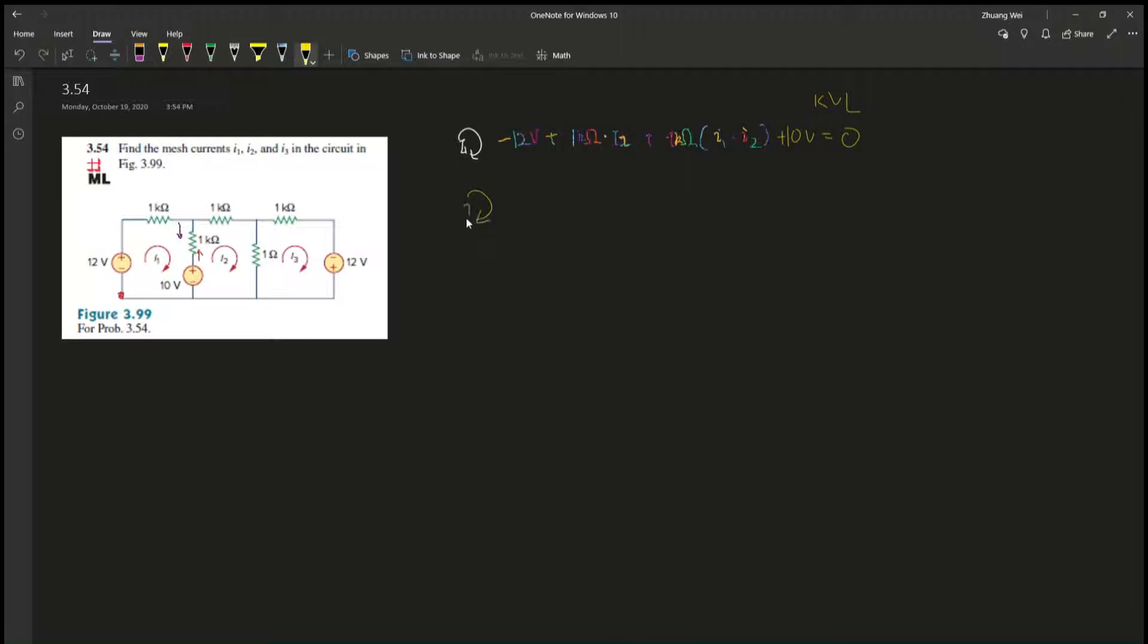And plus 10V right at the end equals zero, because this is Kirchhoff's voltage law, right? And then now we're going on i2. i2 is going, so we can start right over here, so it's negative 10V plus 1k ohm times i2 minus i1, right?